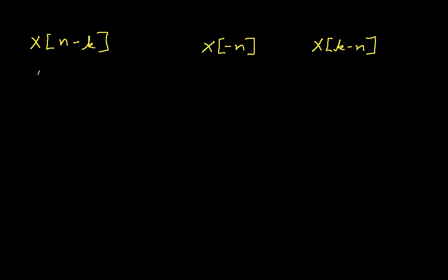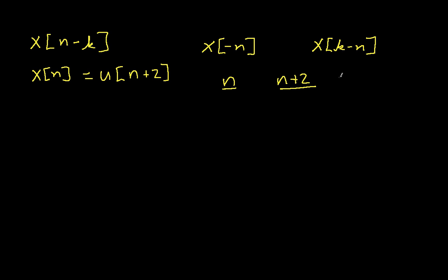Suppose we have a signal x of n, which is created by taking a unit step function and adding 2 to its argument, so we have u of n plus 2. The easiest way to solve these problems is to make a table. When n is 0, n plus 2 is 2, and u of 2 is 1, because the unit step function is 1 when its argument is greater than or equal to 0, and 0 when its argument is less than 0.